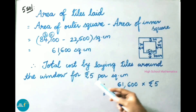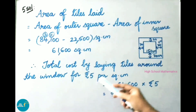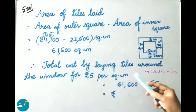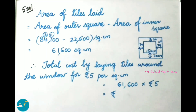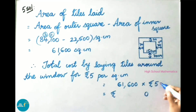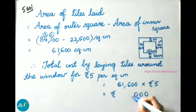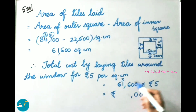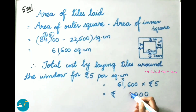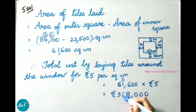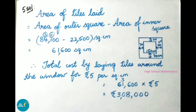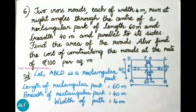Therefore the total cost of laying tiles around the window at 5 rupees per square cm is 61,600 multiplied by 5, which equals 3,08,000 rupees. See now question number 6.